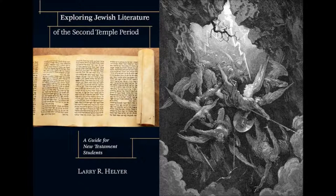Second Temple Period Literature — the date ranges, we'll just use round numbers here. We'll just say 500 BC to 70 AD or 100 AD. Let's just tack on the other 30 years there. So that's the date range — it's stuff written during that span of time.